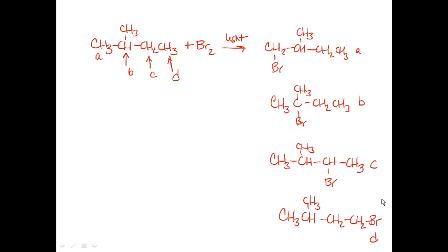Are all four of those products different structural isomers? Do they have different names? Product A is 1-bromo-2-methylbutane. Product B is 2-bromo-2-methylbutane. Product C is 2-bromo-3-methylbutane. And product D is 1-bromo-3-methylbutane. All four have different IUPAC names, and so therefore they're different structural isomers.